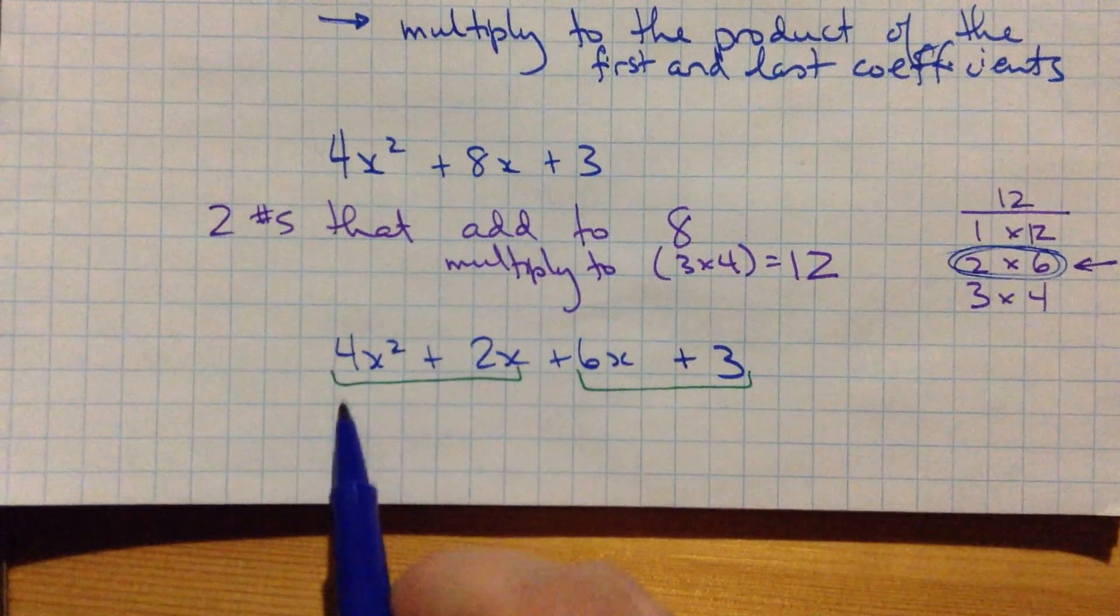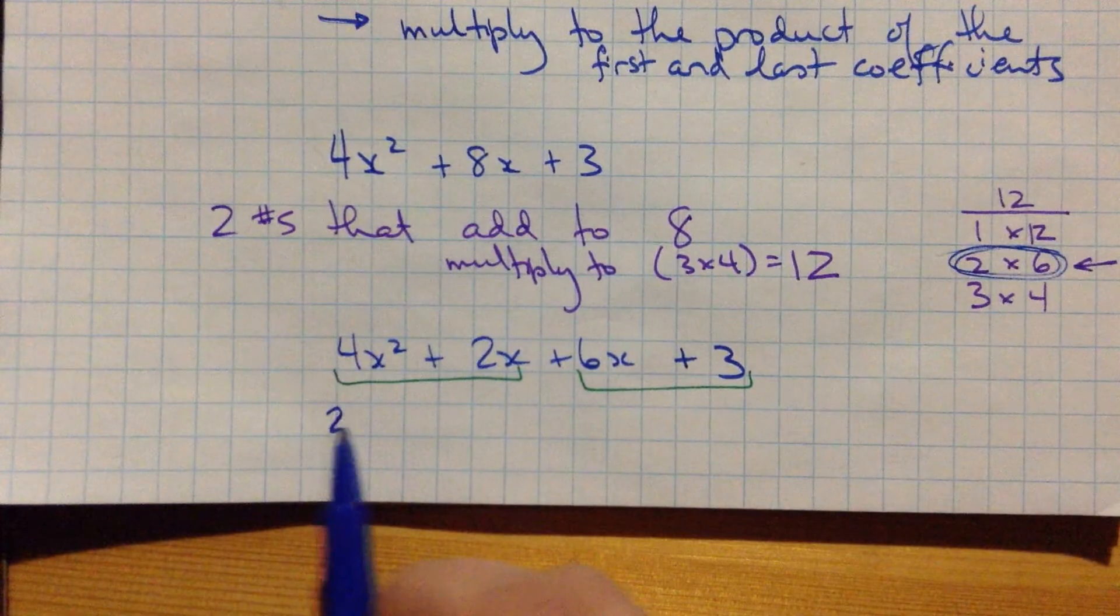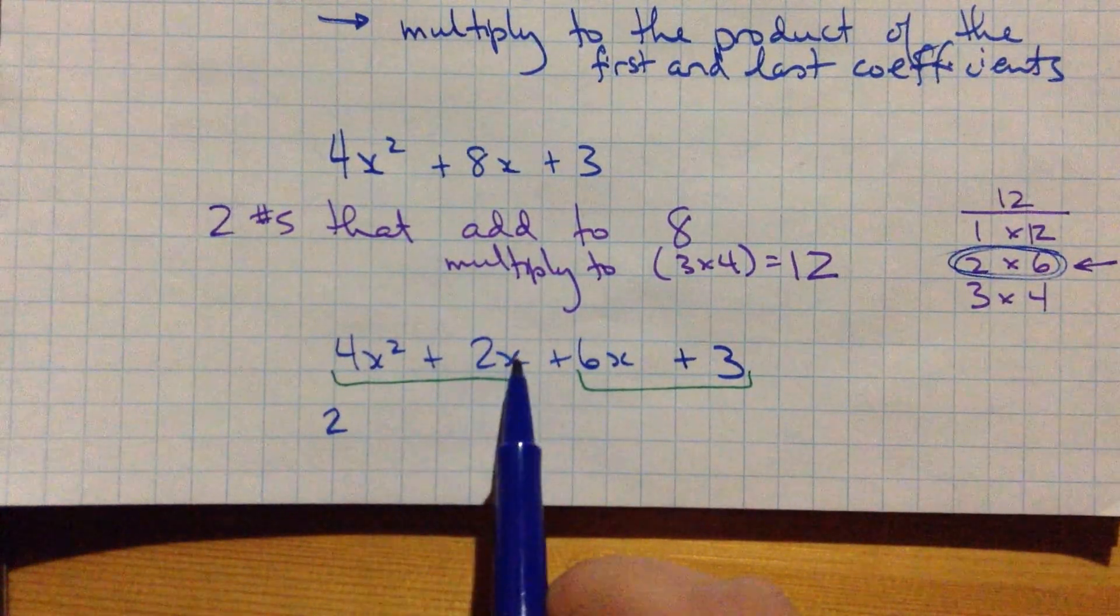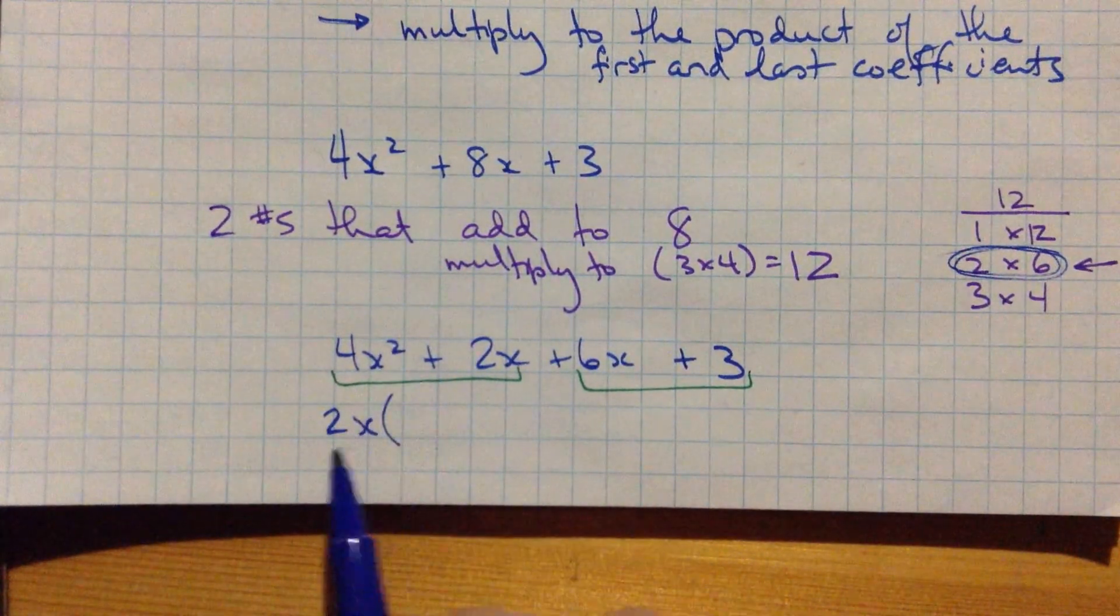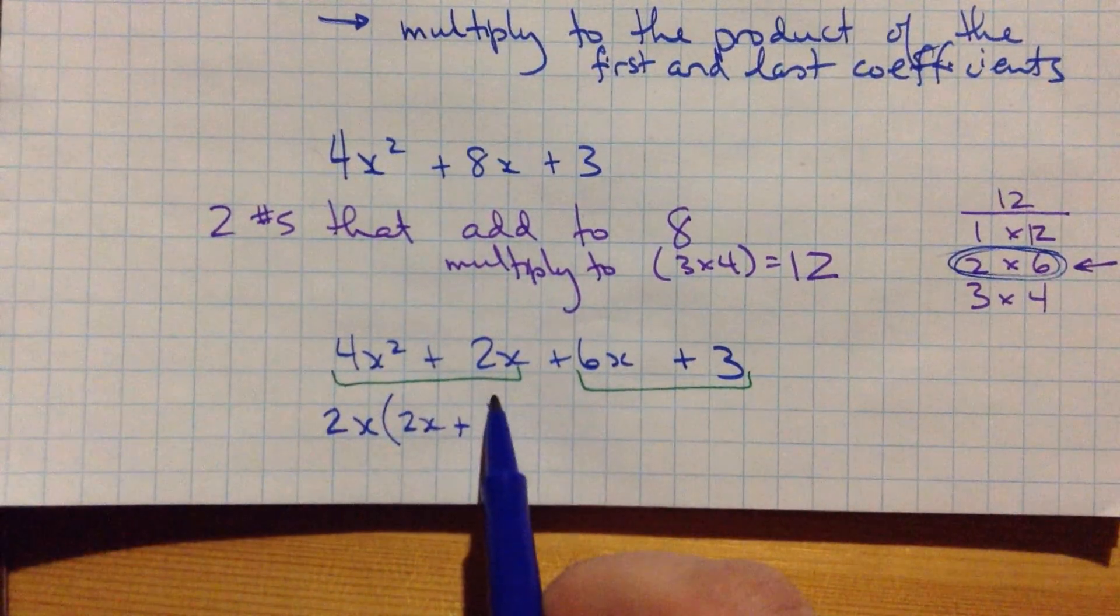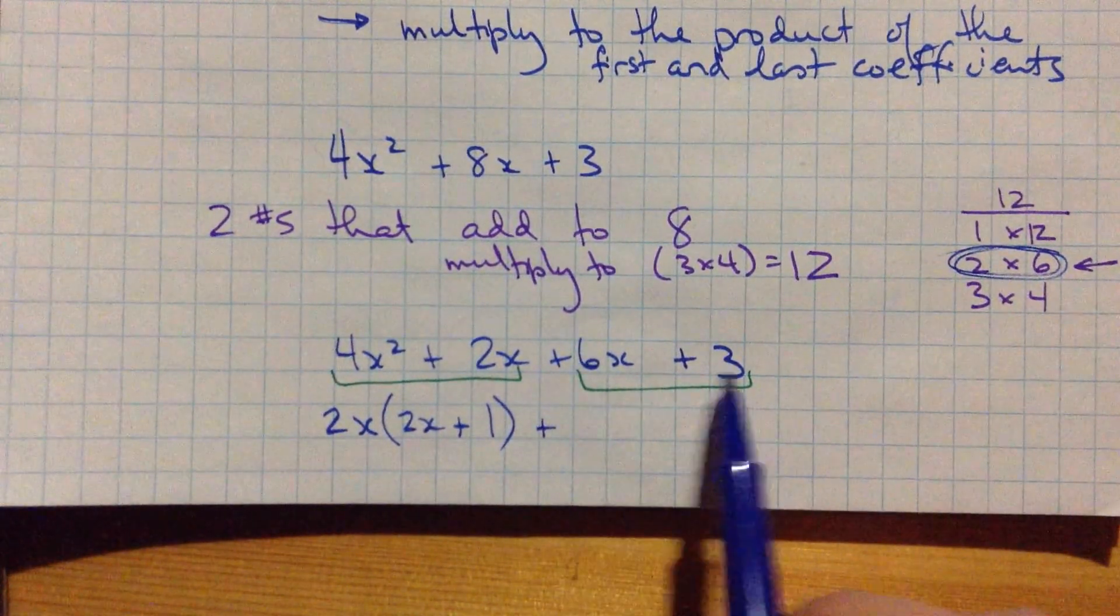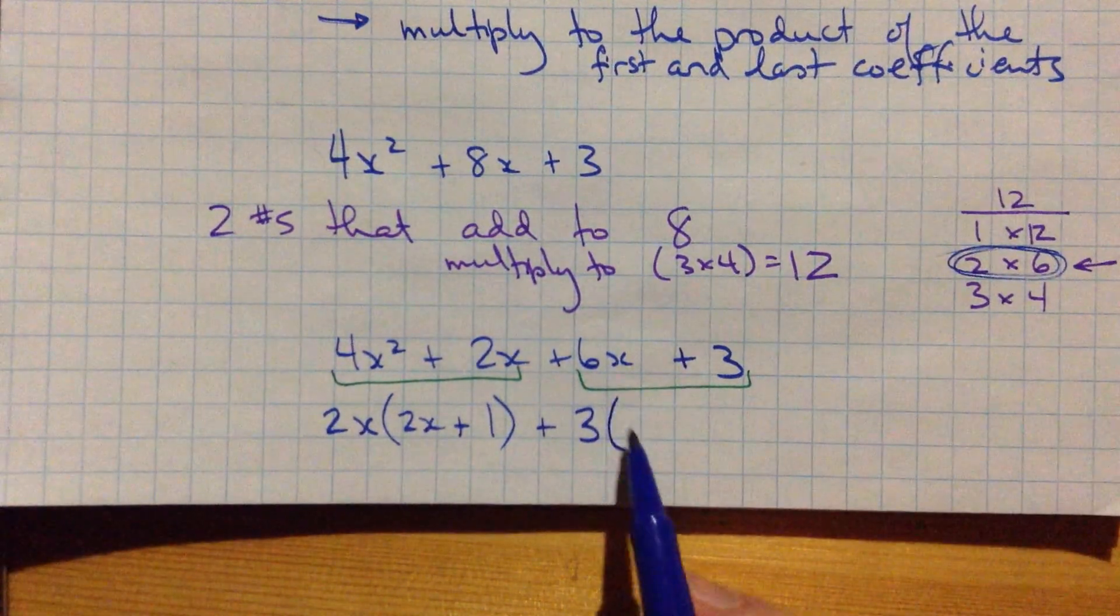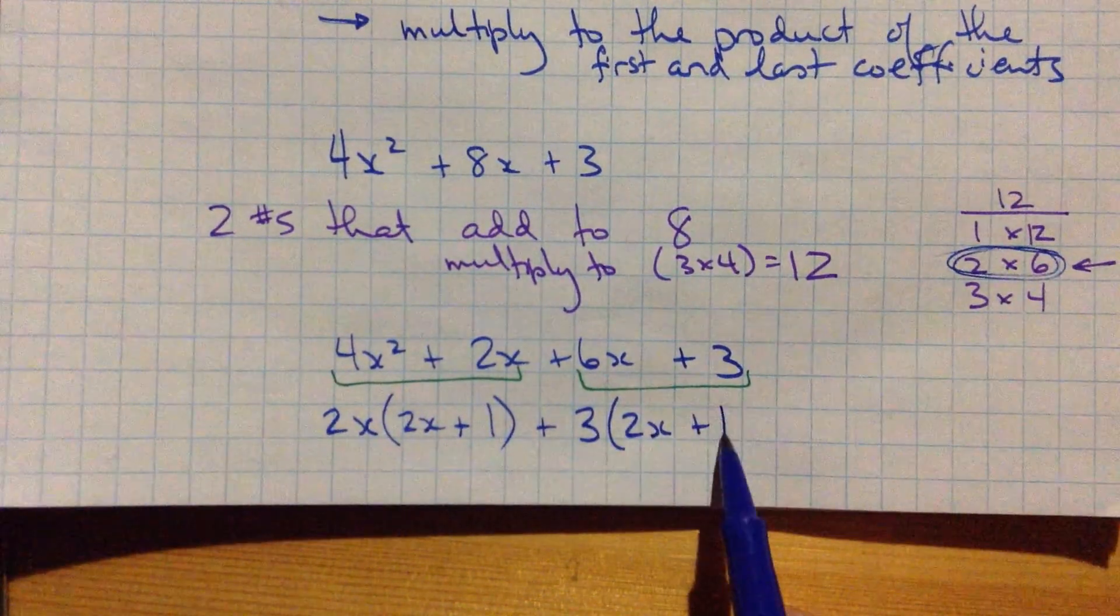Check this out, this is really cool. I'm going to take what's common to each of these. Well, here I've got a 2 and here I've got a 4, so I can take a 2 out of each. They both have an x as well, this has 2 of them, this has 1. I'm going to take 2x out of each of them. 4x squared divided by 2x is 2x, 2x divided by 2x is 1. So I've common factored the first two terms. Now, let's common factor the next two. I've got a 3 in each of them, and that's it. So here, 6x divided by 3 is 2x, 3 divided by 3 is 1.